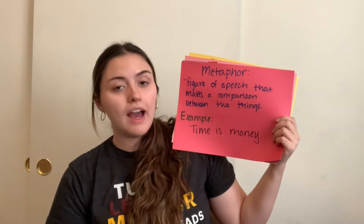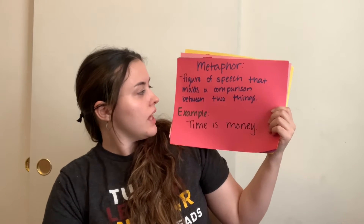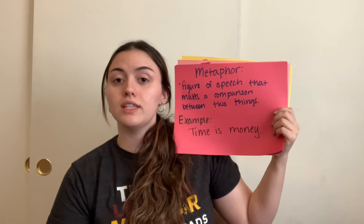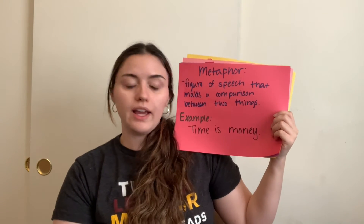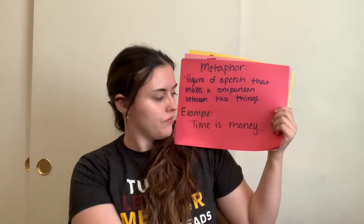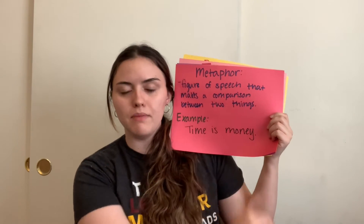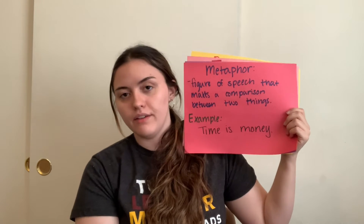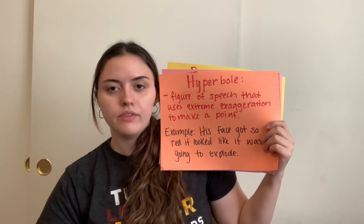Up next we have metaphor, which is a figure of speech that makes a comparison between two things, similar to a simile, but it does not use the words like or as — it usually just has is. For instance, time is money. We know that time is not actually money, which makes it a figure of speech, and it is comparing time and money.